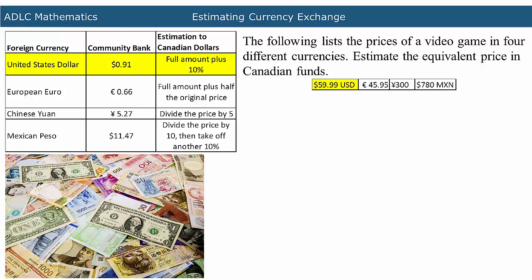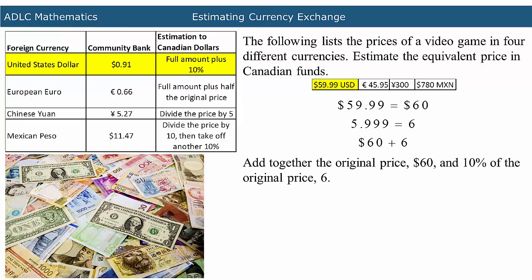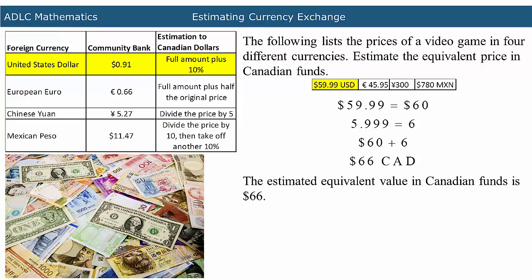First, the price in the United States dollar will be converted into Canadian dollars. The price for the video game in United States dollars is $59.99, which is equal to about $60. To estimate what 10% of the total cost is, the decimal can be moved one place to the left, which results in 5.999, equal to about 6. Now, 10% will be added to the full amount by adding 6 to the original $60. The estimated equivalent value in Canadian funds is about $66.